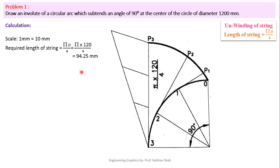Now let us draw the circular arc. First, draw a horizontal line and mark one point as the center of your circular arc. Select your radius — since the diameter is 120 mm, the radius is 60 mm. Set 60 mm on your compass, place the compass at the center point, and draw one circular arc. Then draw a vertical line from this center point to intersect the circular arc, so it sustains 90 degrees at the center.